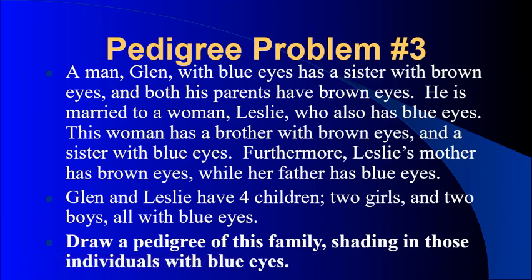This next problem is a little more complicated because it's written in story form and does not go in chronological order. A man, Glenn, with blue eyes has a sister with brown eyes, and both his parents have brown eyes. He is married to a woman, Leslie, who also has blue eyes. Leslie has a brother with brown eyes and a sister with blue eyes. Furthermore, Leslie's mother has brown eyes while her father has blue eyes. Glenn and Leslie have four children — two girls and two boys — all with blue eyes. Draw a pedigree of this family, shading in those individuals with blue eyes. When you come across a problem like this, the best thing to do before drawing the pedigree is to create notes on the family.